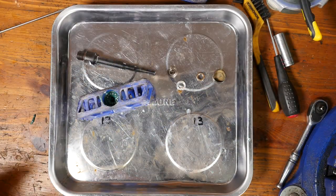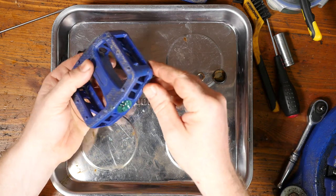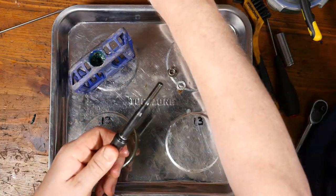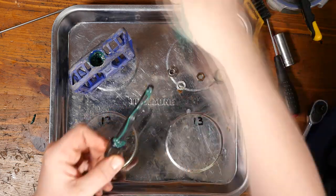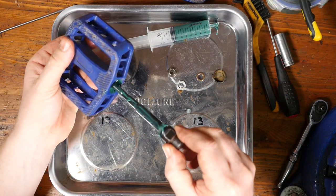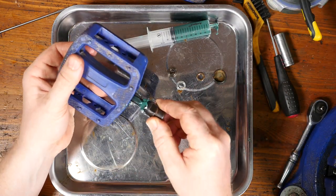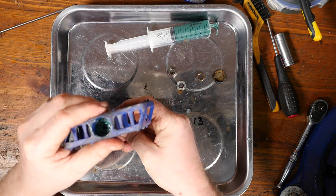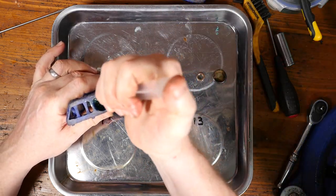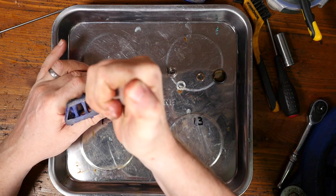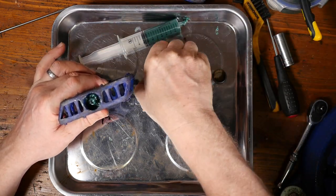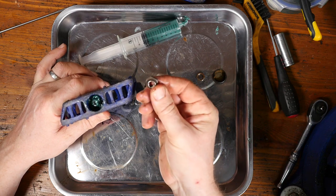So that's looking good. Pop a bit more grease in there. I'll grease the axle first. So just push that in gently so you don't disturb any of the bearings. Then the extra bit of grease at the end.